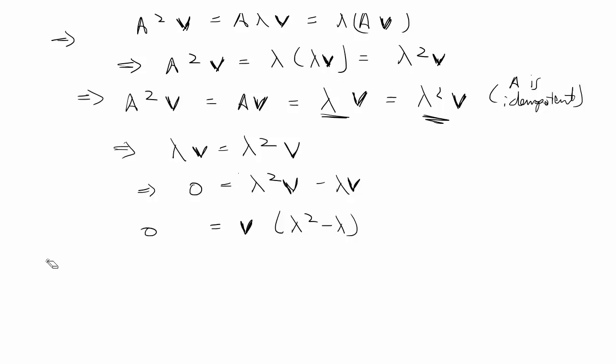Since by definition we said at the top that the eigenvector cannot be zero, since V is non-zero by definition, therefore we have zero is equal to lambda squared minus lambda.